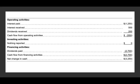Under U.S. GAAP, interest paid, interest received, and dividend received are all in Operating Activities. Nothing is reported under Investing Activities for these items, and dividend paid is under Financing Activities.